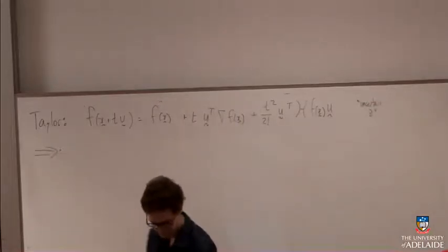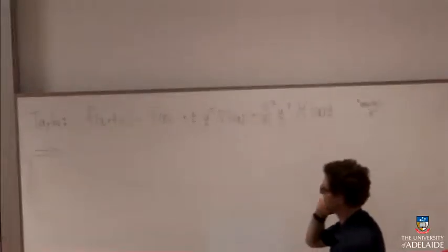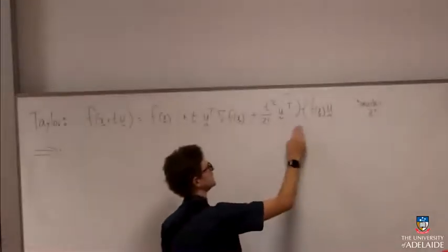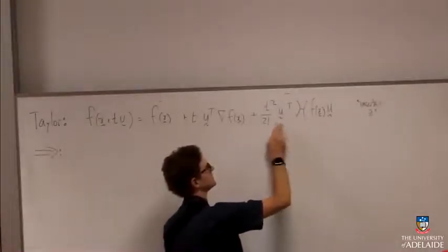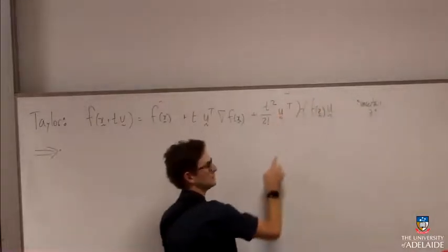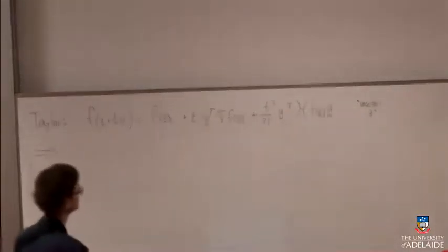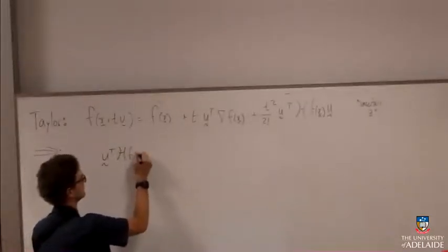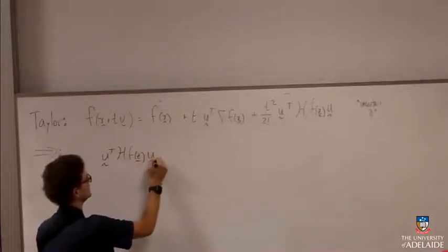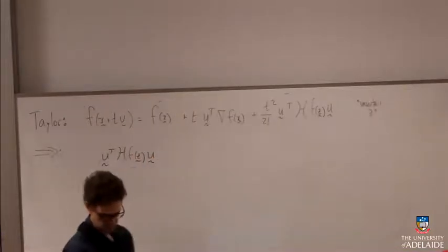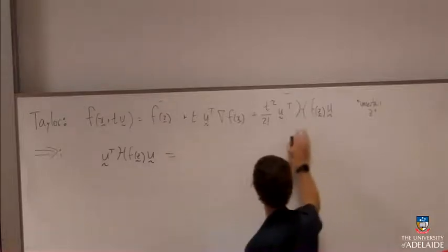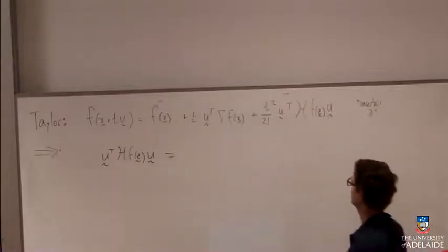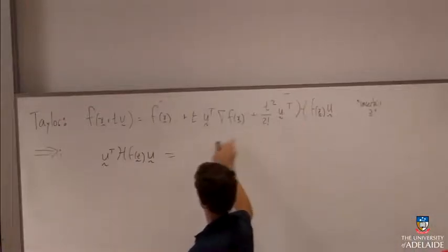OK. So in the forward direction, assuming that my function is convex, I can write this out. And then actually I can just rearrange things here. I'm interested in the Hessian being positive definite, which means I'm really interested in this term here. So let's actually just make that the subject. I want to prove that this is positive or greater than or equal to zero here.